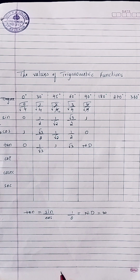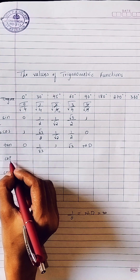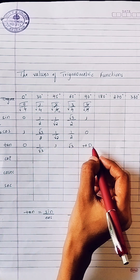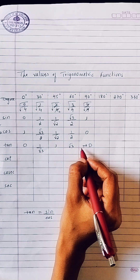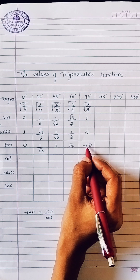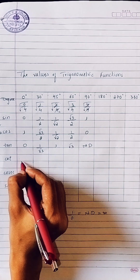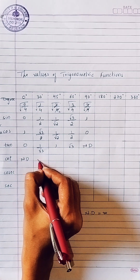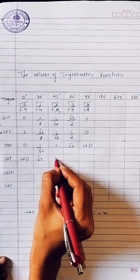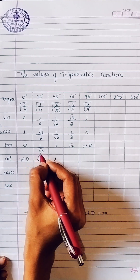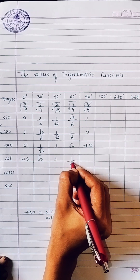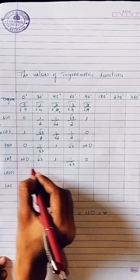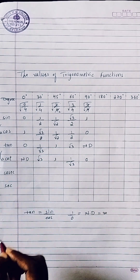The next one is cot. For cot, again we write the values going from 0 to 90 and then coming back. The first and last values are 0 and not defined. The cot column is the reverse of tan.